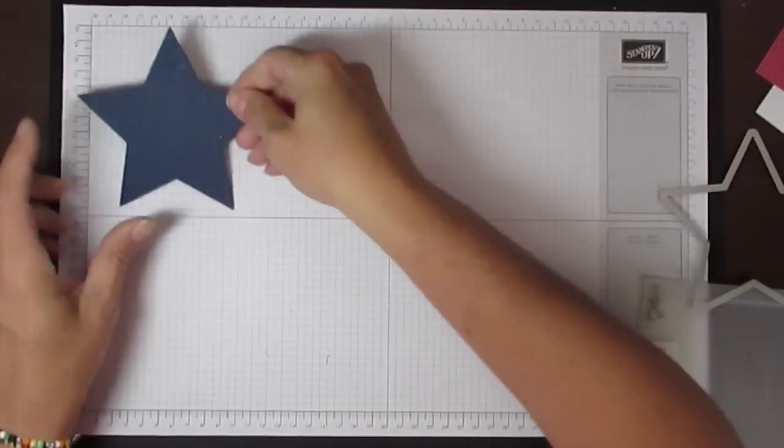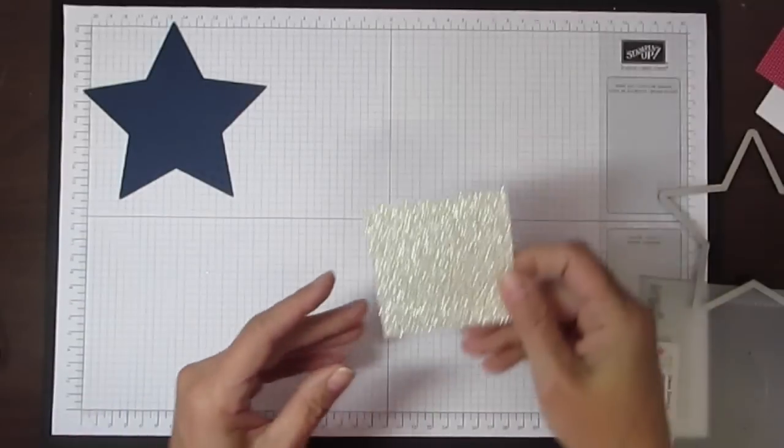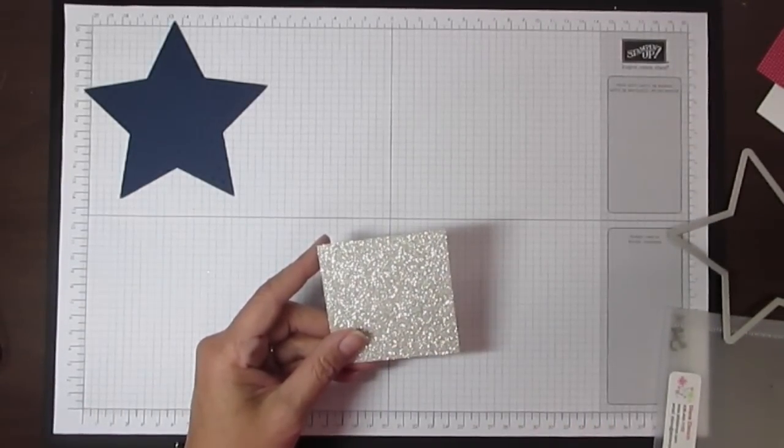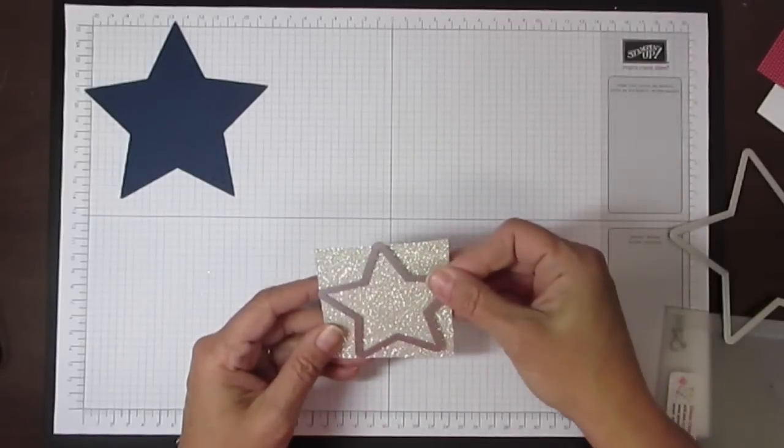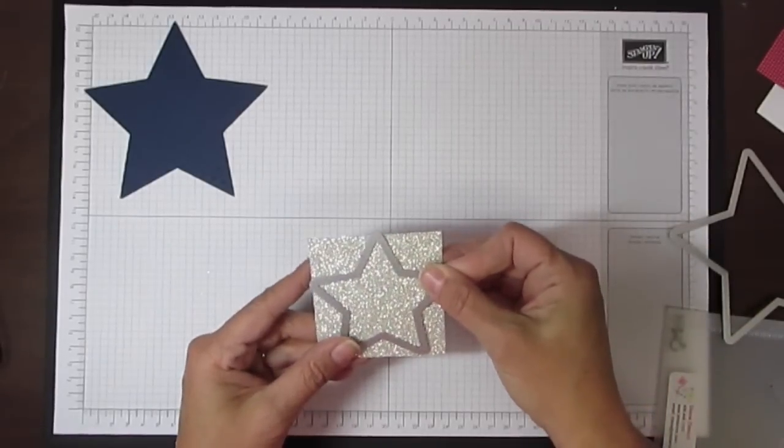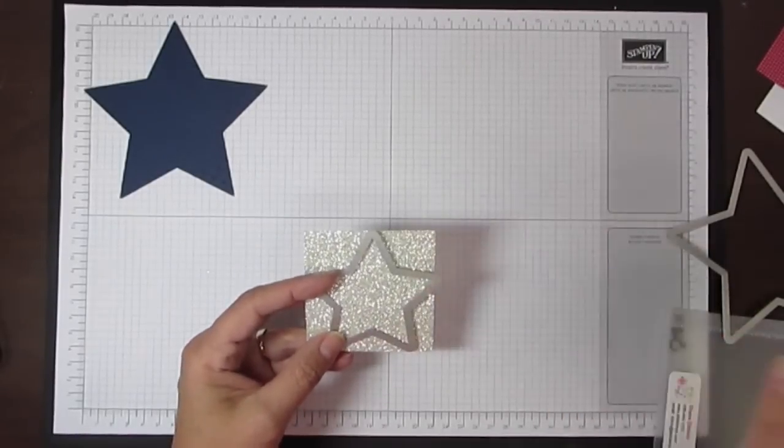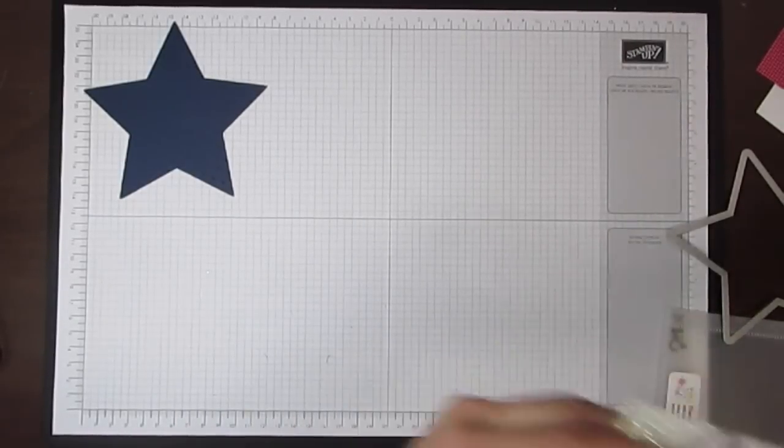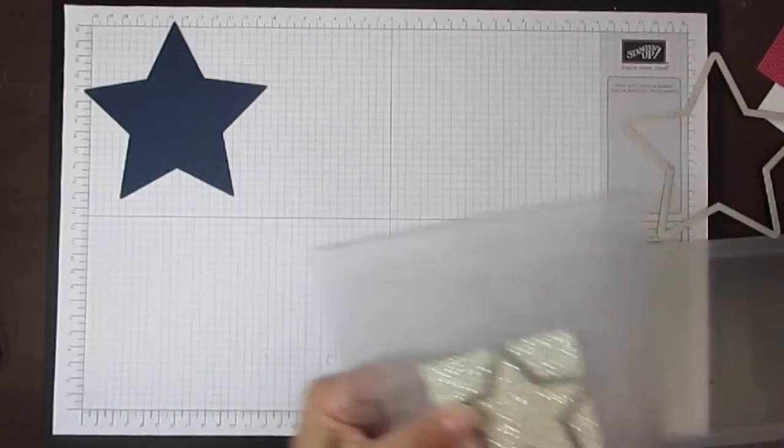So there's the beginning of it. The next thing I'm going to do is take a piece of our glimmer paper, and this time I'm using the middle star. There's five sizes of framelits, and I'm going to use the middle one to cut with this glimmer paper. That again is going to go through the big shot.